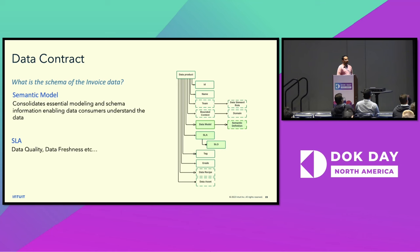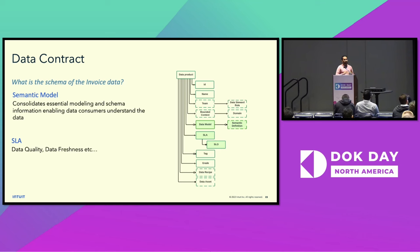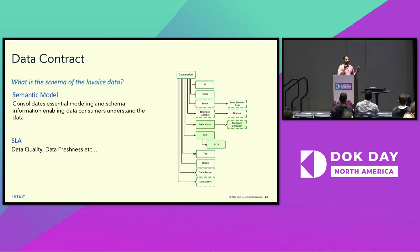What is the schema of that invoice data? This consists of two aspects: a semantic model, which consists of modeling and schema information enabling data consumers to understand what exactly the data is — field names, data types, semantic data types (for example, a field is a string but actually represents a currency or address). It also consists of SLAs, which could cover data quality and data freshness, which consumers care about. As a data steward, they are responsible for ensuring those SLAs. From a system-wide perspective, we implement mechanisms so data stewards can declare SLAs, and the system measures and provides visibility into whether those SLAs are being met.